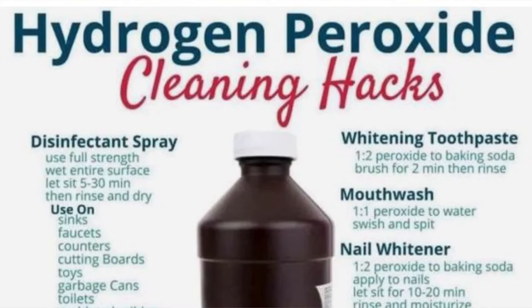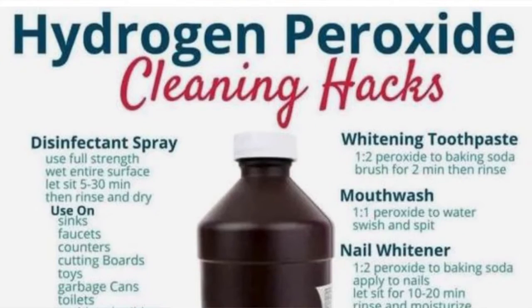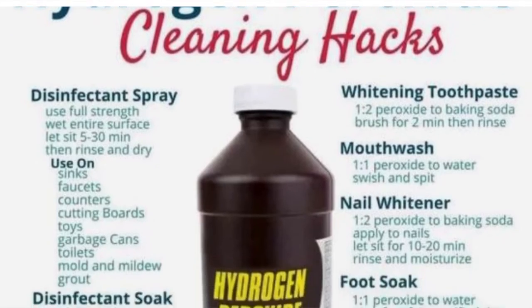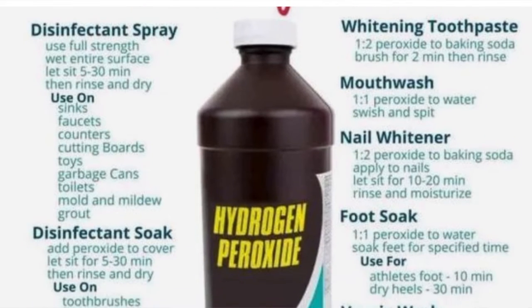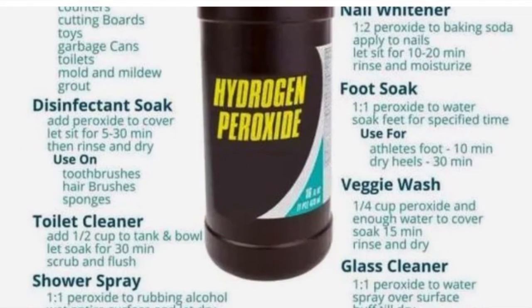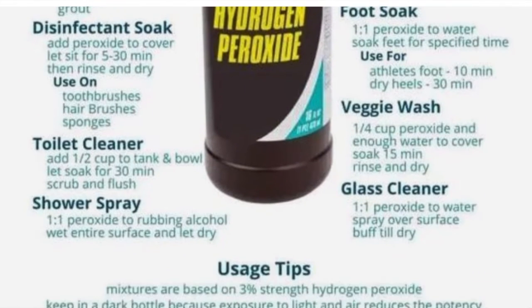Hi guys, today we're talking about hydrogen peroxide. Hydrogen peroxide is used for a variety of things in plants, but it has a very wide use. Anything from mild detergent to literal explosives, hydrogen peroxide is useful. We mainly use it to bleach our hair, but there's a ton of different uses.